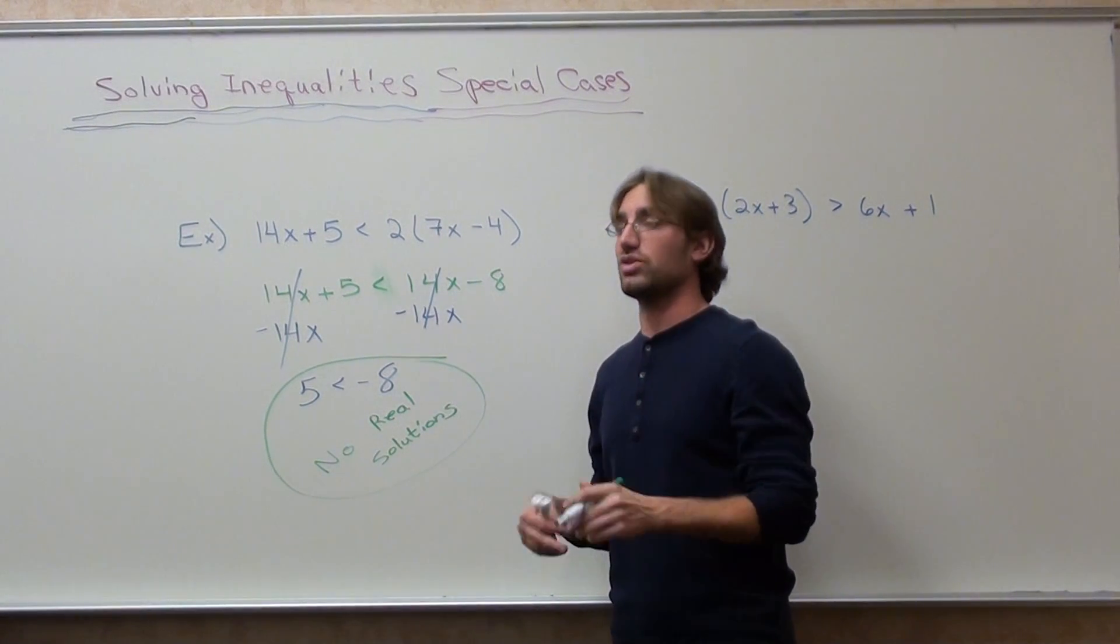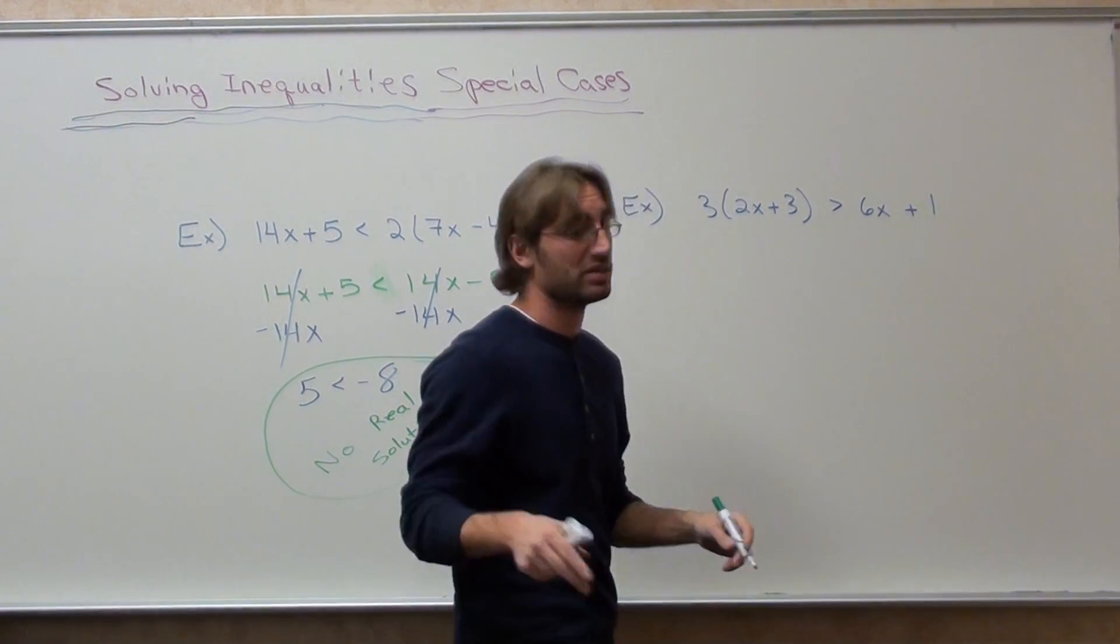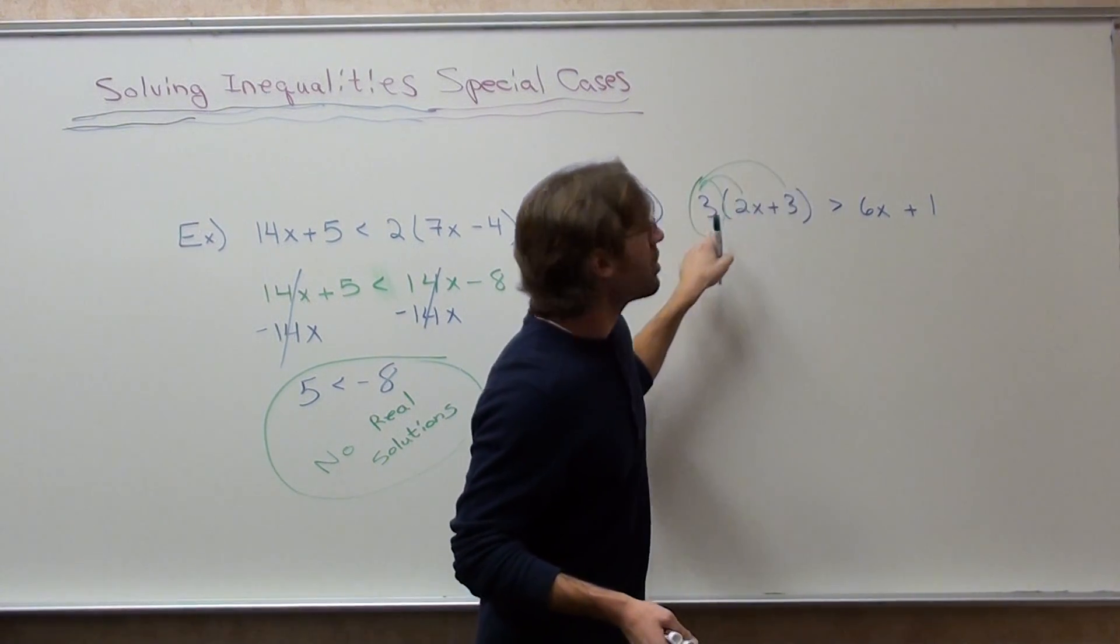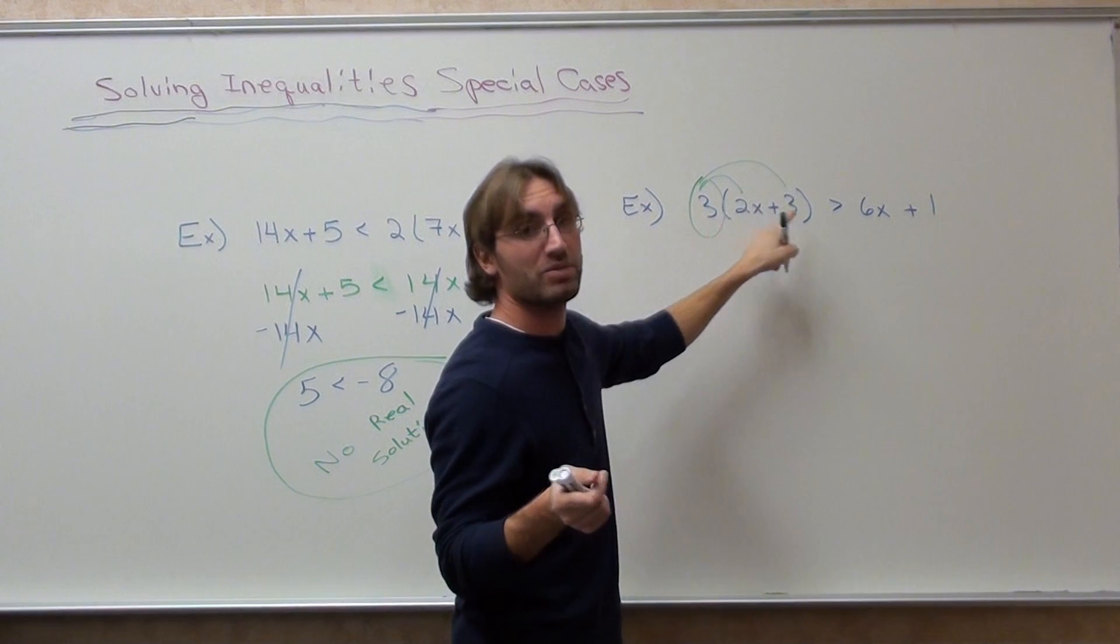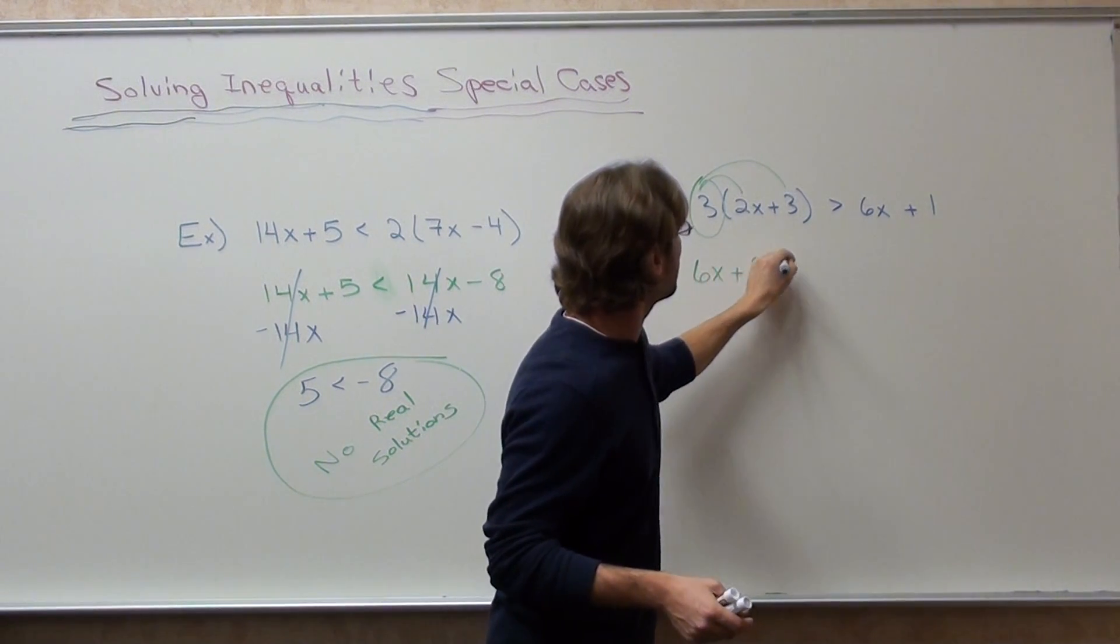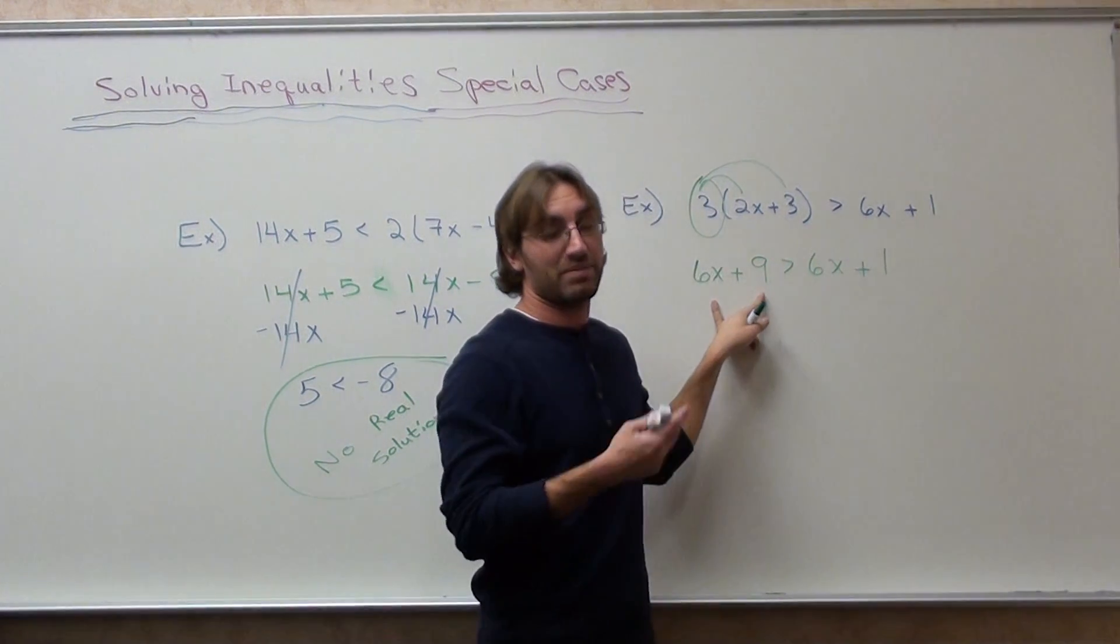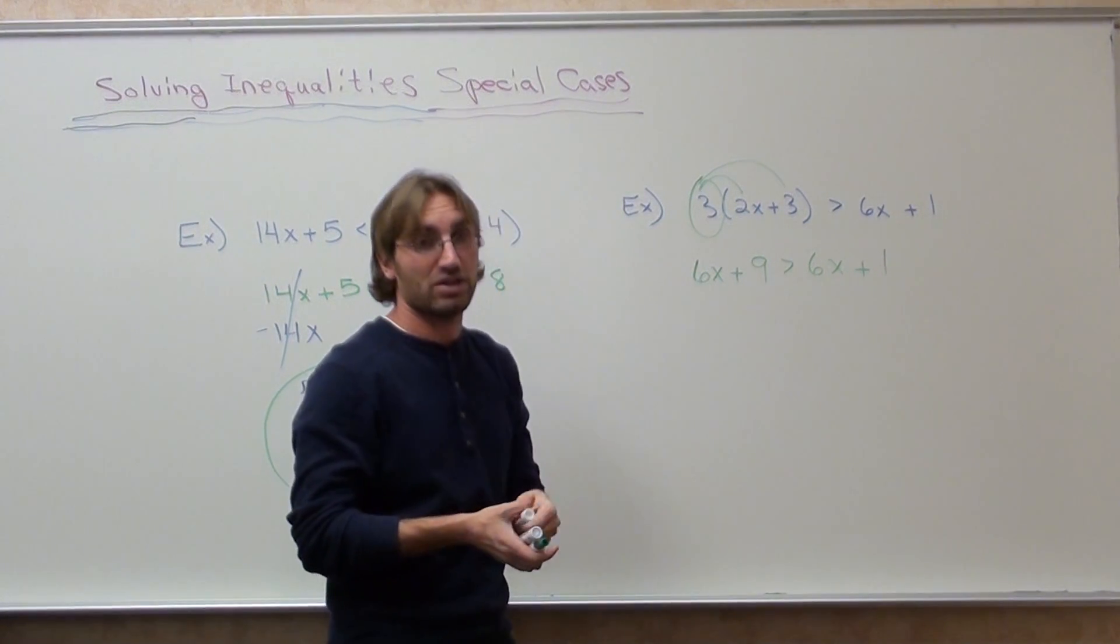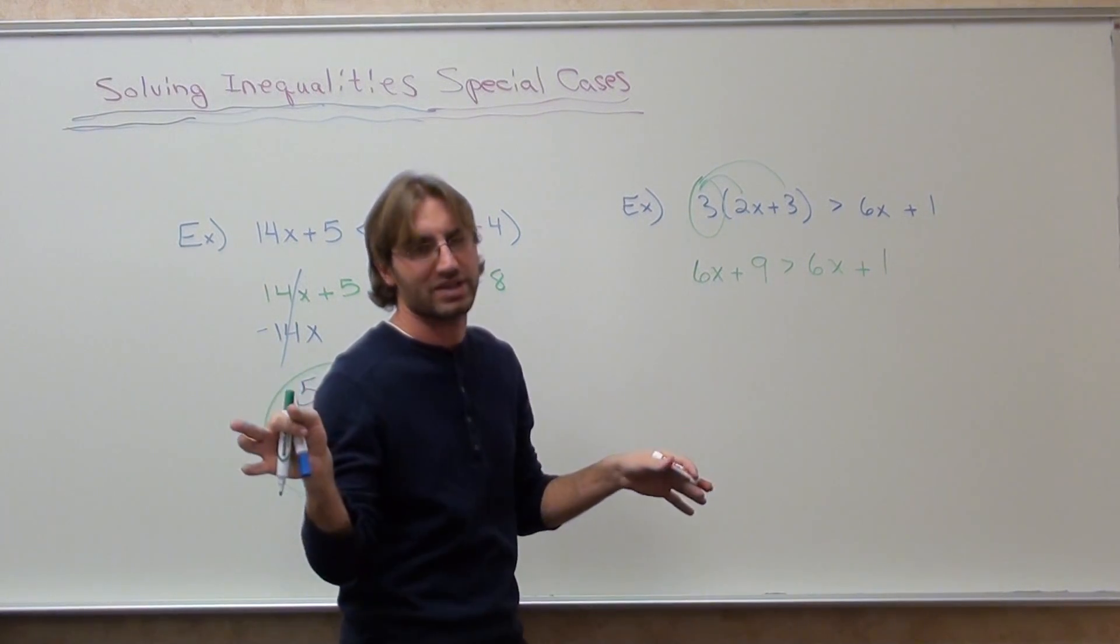When the statement is true and there's no x values, something else in time. So let's go ahead and do that. Let's distribute our 3. 3 times 2x is 6x. 3 times 3 is 9. I can't combine like terms because they're not like terms. But what I can do is put everything with an x on one side, everything without an x on the other. Let's do the x's first.